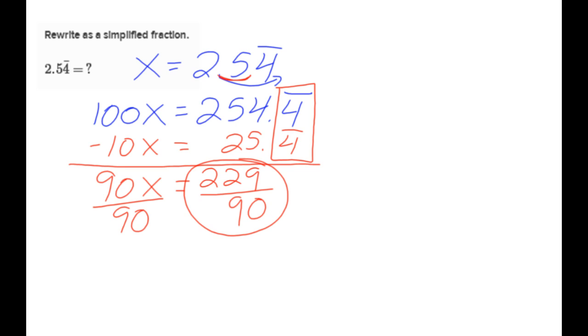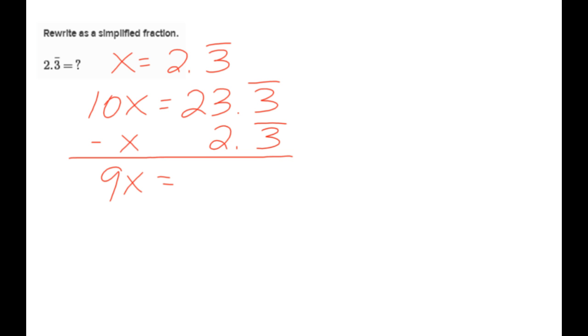Now, let's take a look at the next problem. Rewrite in simplest form, 2.3 repeating. Let x equal 2.3 repeating. We're going to multiply by 10, so we get 10x equals 23.3 repeating. And then, I subtract the original. I'm going to subtract the x, because I need to subtract so that my .3 repeating goes away. And I get 9x equals 21. Divide by 9. 3 goes into both. 7 thirds. And 7 thirds is 2 and 1 third.